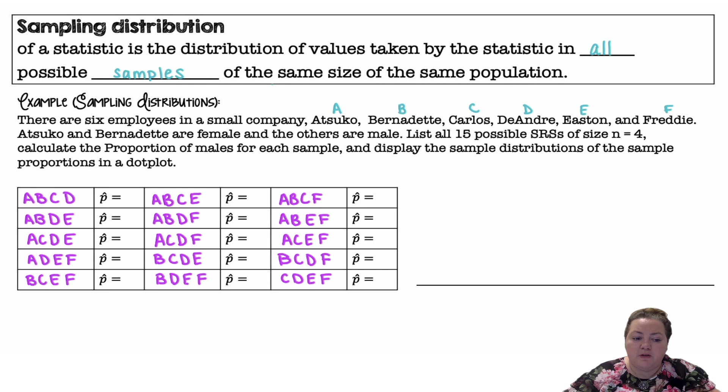And then they wanted us to find the proportion that are male. So A and B are female. C, D, E, and F are male. So C and D is two out of the four, which is 0.5, is my sample proportion for that sample. The next one, I have two males out of four, so also 0.5. This time I have three out of four, which is 0.75. Three out of four again, 0.75. Three out of four again, 0.75. So I'm going to keep going and calculate the proportion that are male.